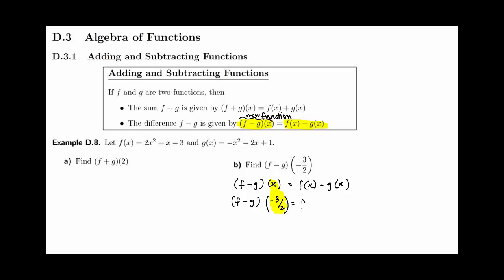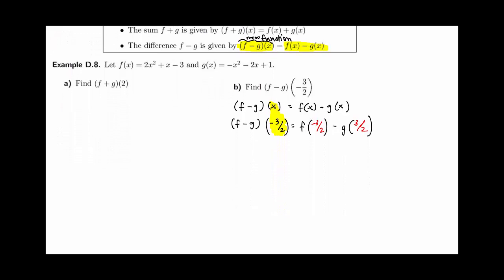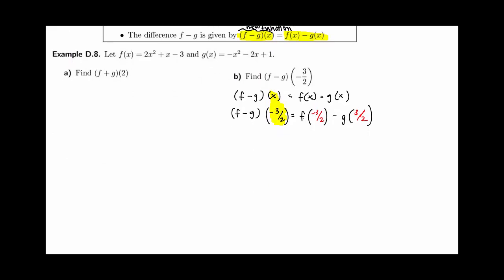Therefore, we will replace every x with negative 3 halves. So we get f of negative 3 halves minus g of negative 3 halves. All we have left to do is evaluate each function at negative 3 halves and then find the difference.